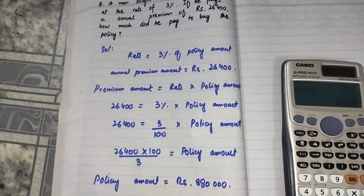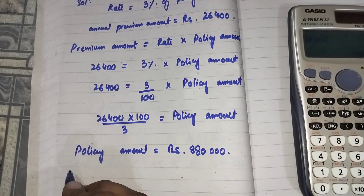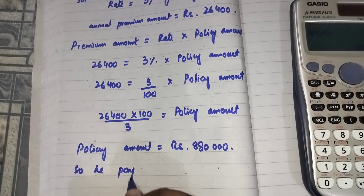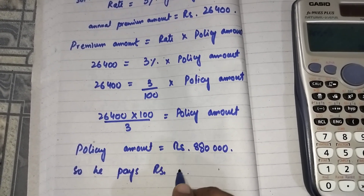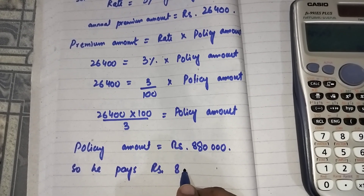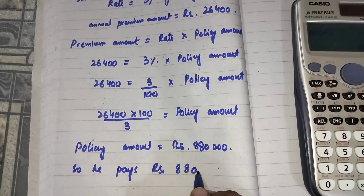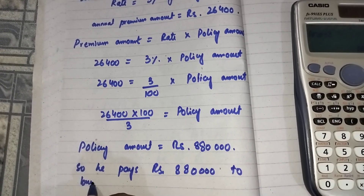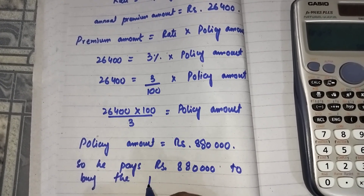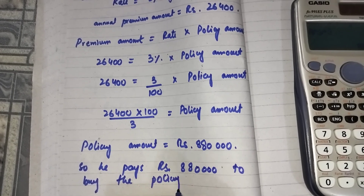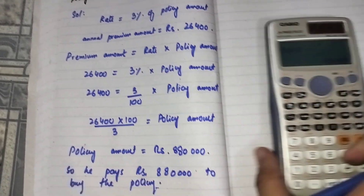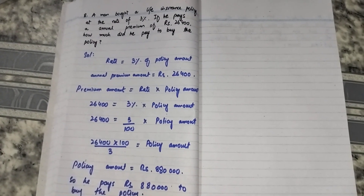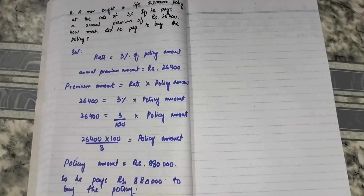So how much did he pay to buy the policy? He pays Rs. 8,80,000 to buy the policy. This is question number eight. Inshallah, in the next video we will start the next question. Assalamualaikum.